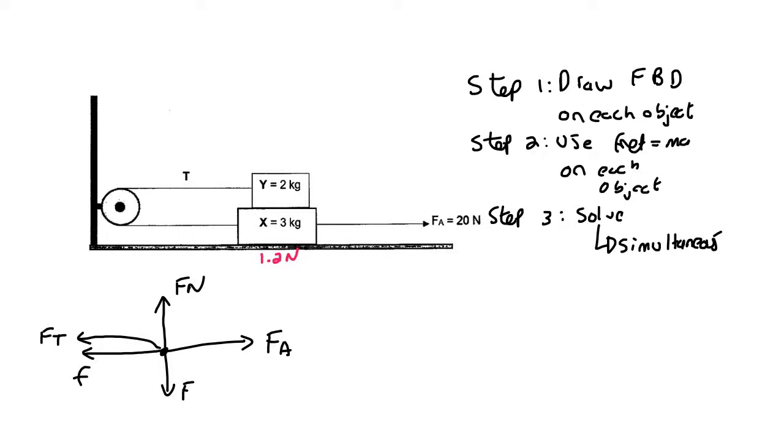What I normally do is divide my page in half and do a free body diagram of the one object. So this would be object X, which we already did, and then this would be object Y.